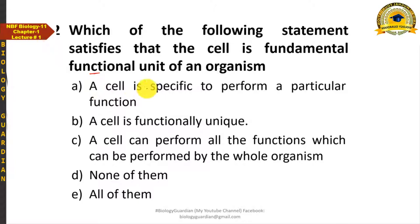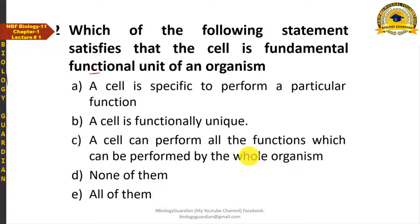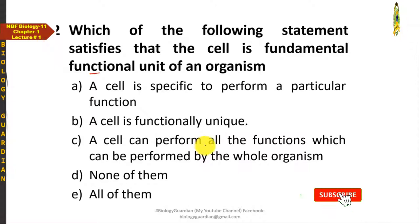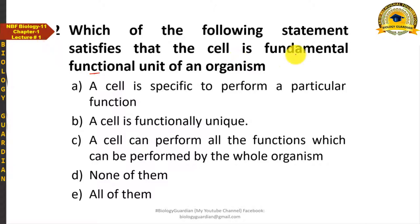Why is a cell called the functional unit? It was demonstrated that a cell is specific to perform a particular function — this is correct — but does this alone justify calling it the fundamental functional unit? Similarly, 'a cell is functionally unique' is also correct, but does it best justify the term? The most suitable statement is: 'a cell can perform all the functions which can be performed by the whole organism.' All life-related functions — reproduction, nutrition, excretion, gas exchange, respiration — can also be performed by a single cell. Therefore, option C is the correct answer, as it best justifies that the cell is the fundamental functional unit of an organism.